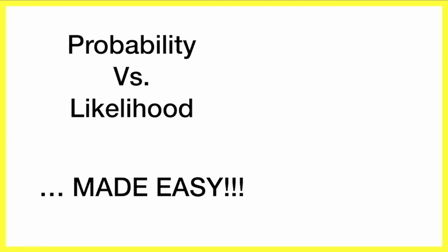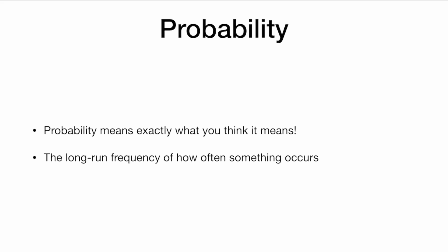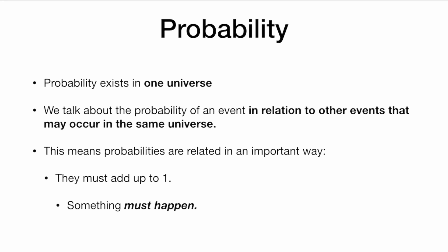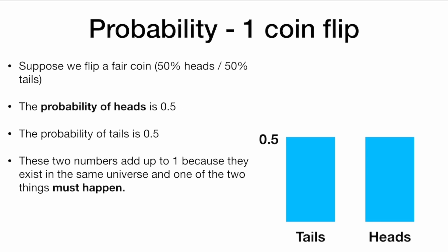Today we're going to learn about probability versus likelihood. So what is probability? Probability means exactly what you think it means. It is the long-run frequency of how often something occurs. Probability is the word we are most accustomed to. Probability exists in one universe. When we talk about the probability of an event, we talk about it in relation to other events that may occur in the same universe. This means that probabilities are related in an important way — they must add up to one. Something must happen.